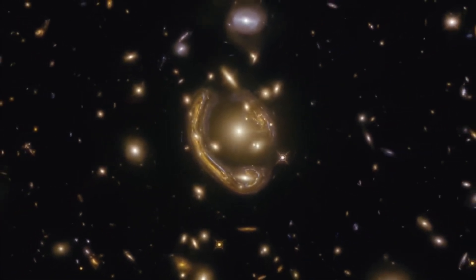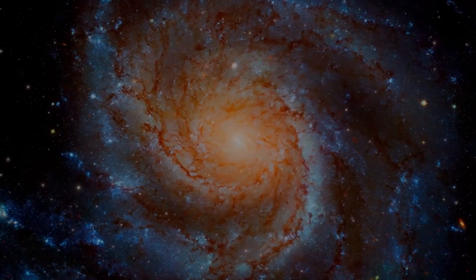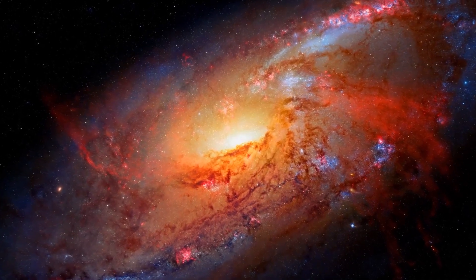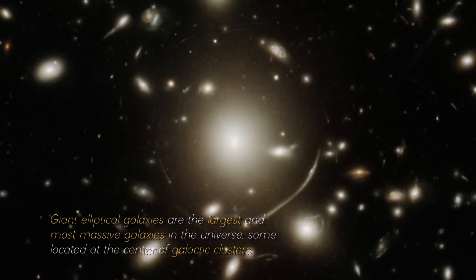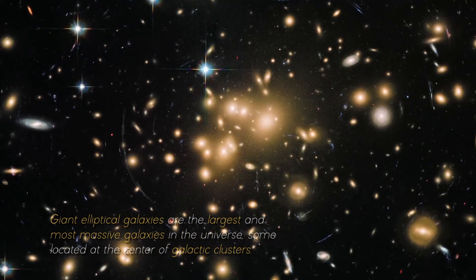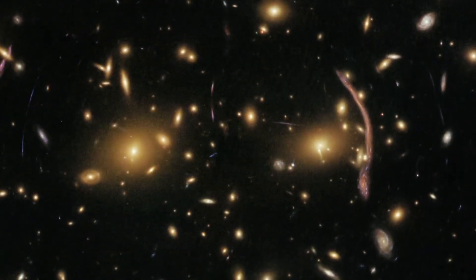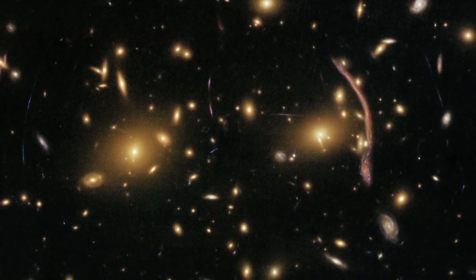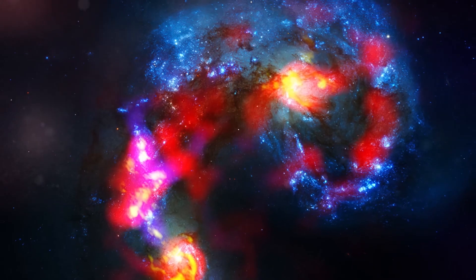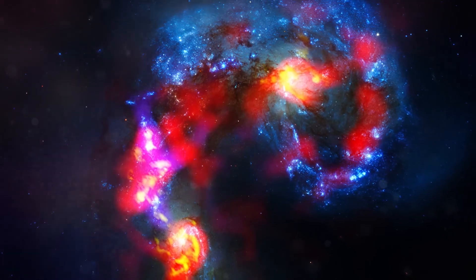The massive, compact, quiescent galaxy, or fossil galaxy, is a particular type of galaxy that has stopped forming new stars and is considered a possible precursor to the giant elliptical galaxies. Giant elliptical galaxies are the largest and most massive galaxies in the universe, some located in the center of galactic clusters. These galaxies have a smooth, spherical shape composed mostly of old, red stars. They are rare in the early universe, since at that time, most galaxies were still in the process of star formation and had irregular shapes.